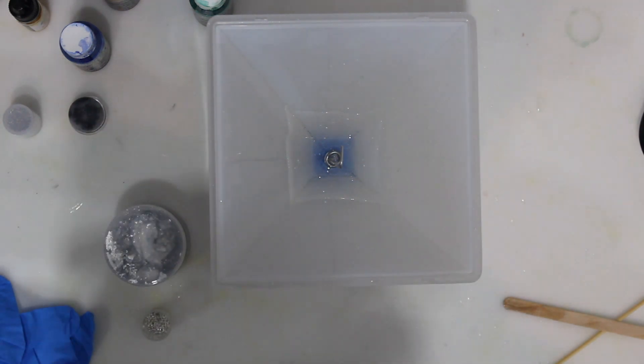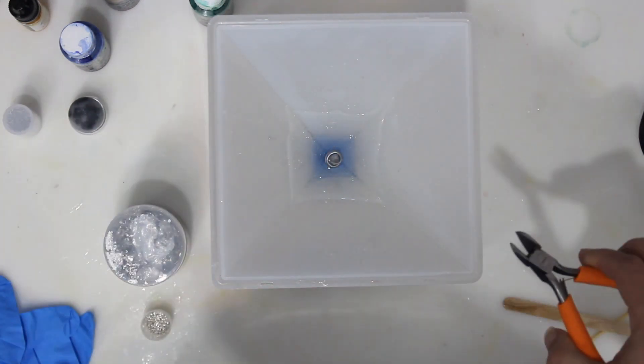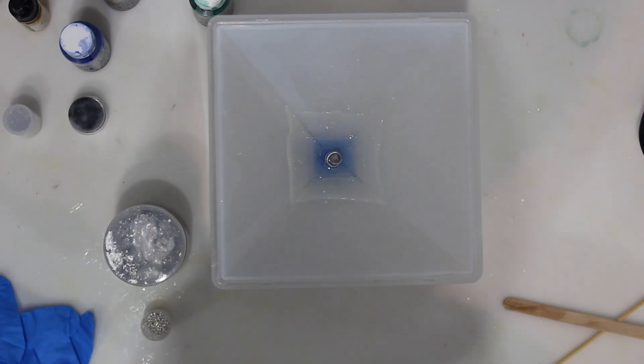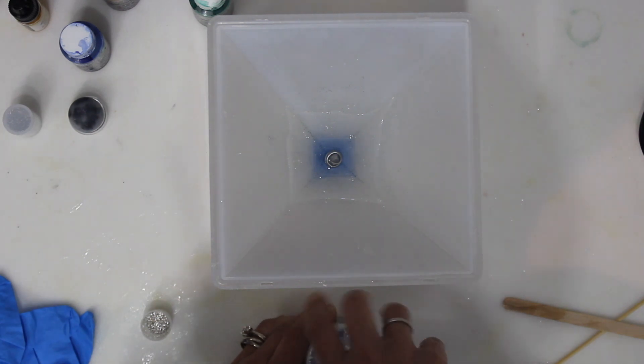Once the crystal is secure in the hardened resin, I will remove the suspension apparatus and trim the wire. Next I will place a layer of silver plated foil on the hardened apical layer.